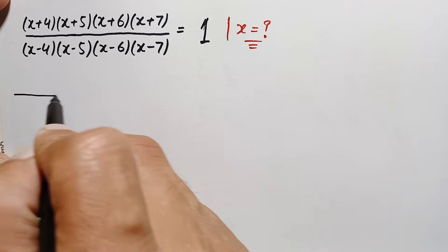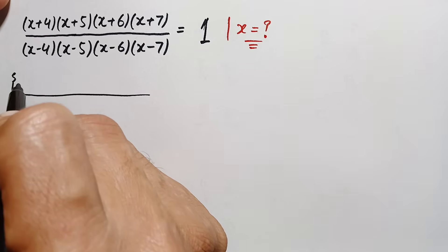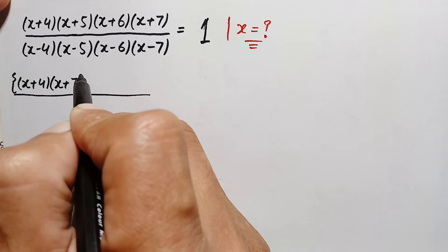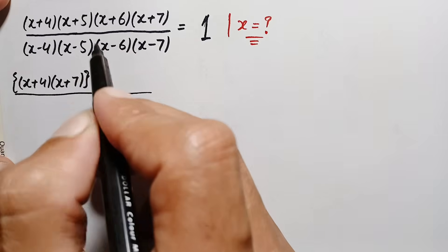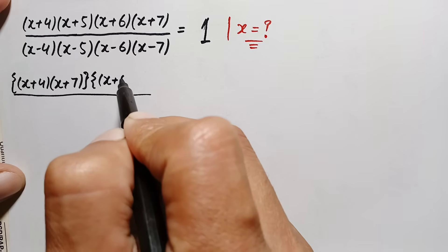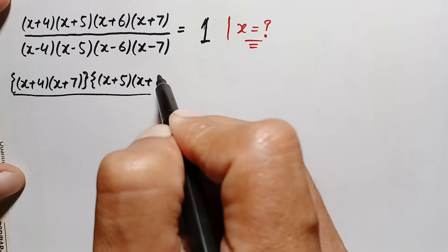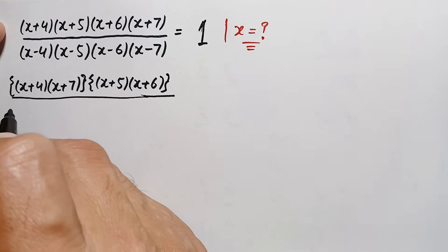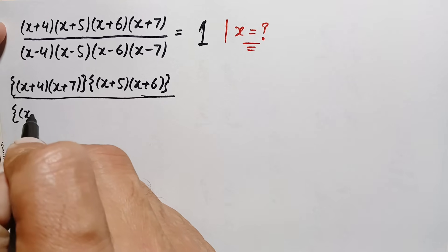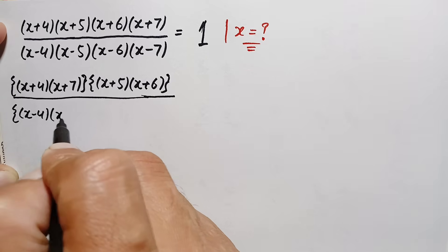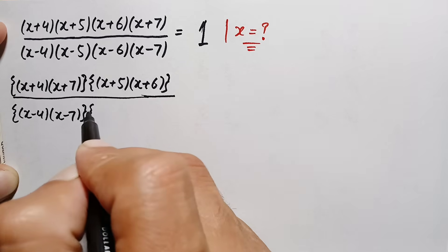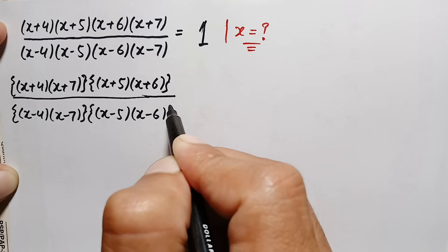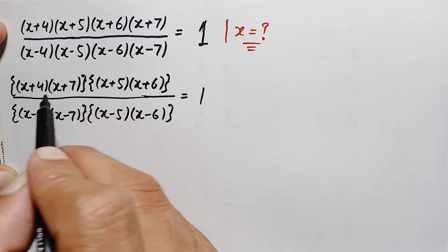So the left hand side will become: combining the first and last expressions gives (x+4)(x+7), times combining the middle two expressions (x+5)(x+6), divided by — and in the same way the denominator becomes (x-4)(x-7) times (x-5)(x-6), is equal to 1.